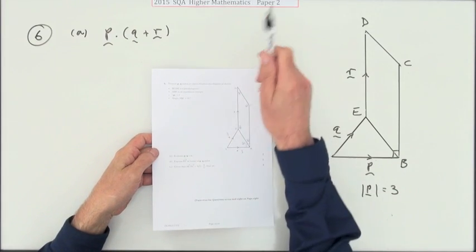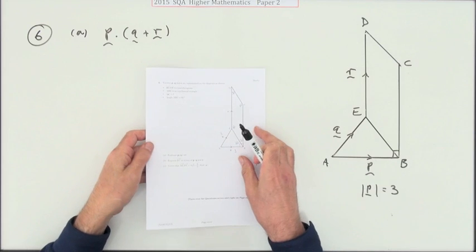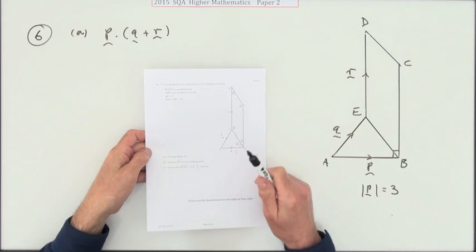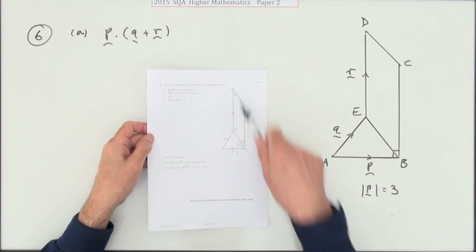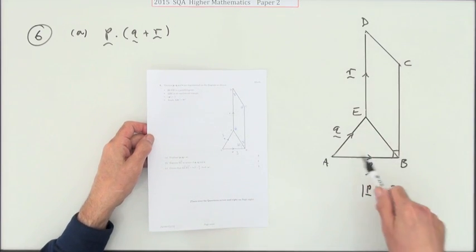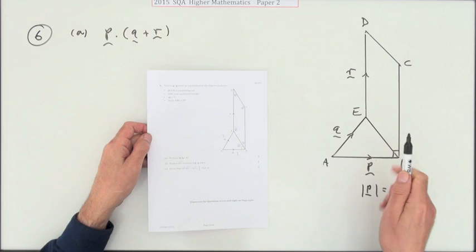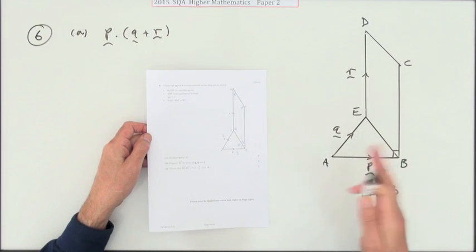Number 16 from Paper 2 of the old Higher Math Paper 2015. We've got a vectors question with diagrams, with angles that you can probably guess, and parallel sides. Parallel sides means the same vectors and so on.